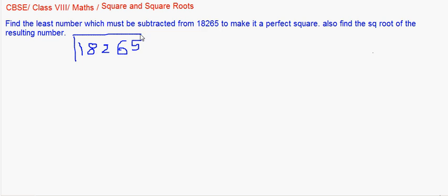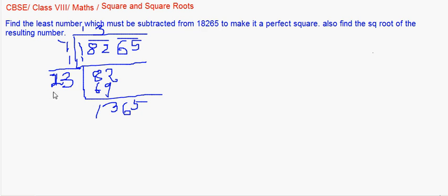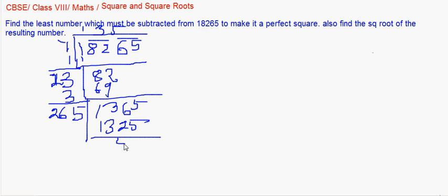If you recall, we are pairing or grouping them in pairs. So the first number I get is 1. I'll bring down 82, thereby adding 1 here — 1 plus 1 giving us 2. Then 23 times 3 gives us 69. If I subtract 69 from 82 I'm getting 13, thereby bringing down 65. If I add 3 I'm getting 26. So 265 times 5 — it's not actually giving me 1365, it's giving me 1325, thereby leaving us a remainder of 40.